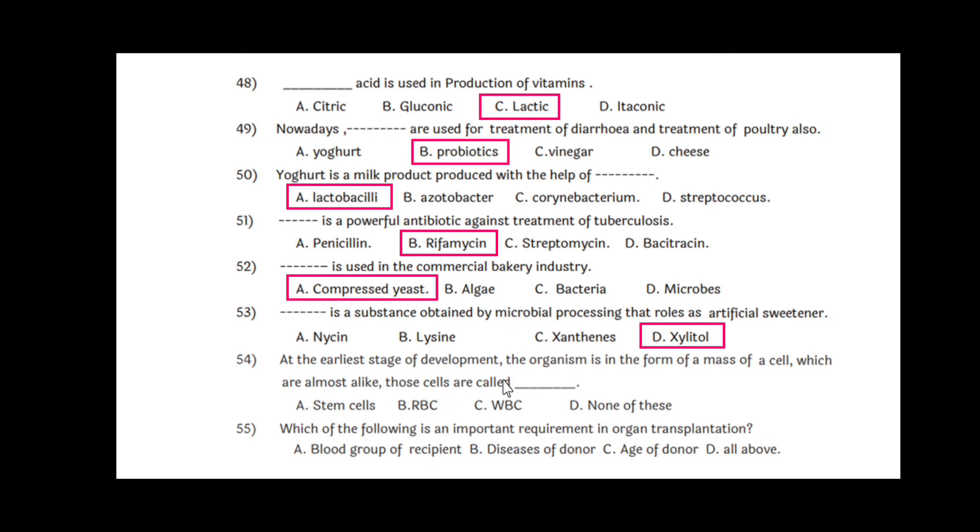Question 54: At the earliest stage of development, the organism is in the form of mass of cells which are almost alike. Those cells are called stem cells, option A. Question 55: Which of the following is an important requirement in organ transplantation? Out of these four options, the right is all of these: blood group of recipient, tissues of the donor, and age of the donor. All these three are required.